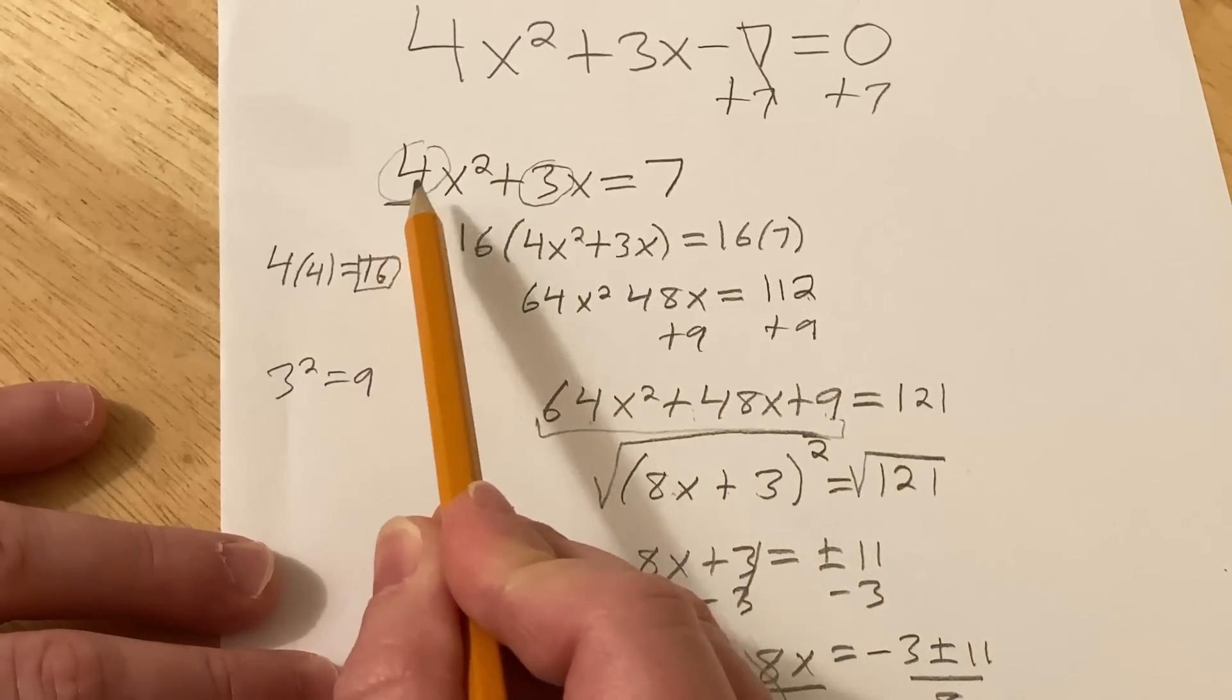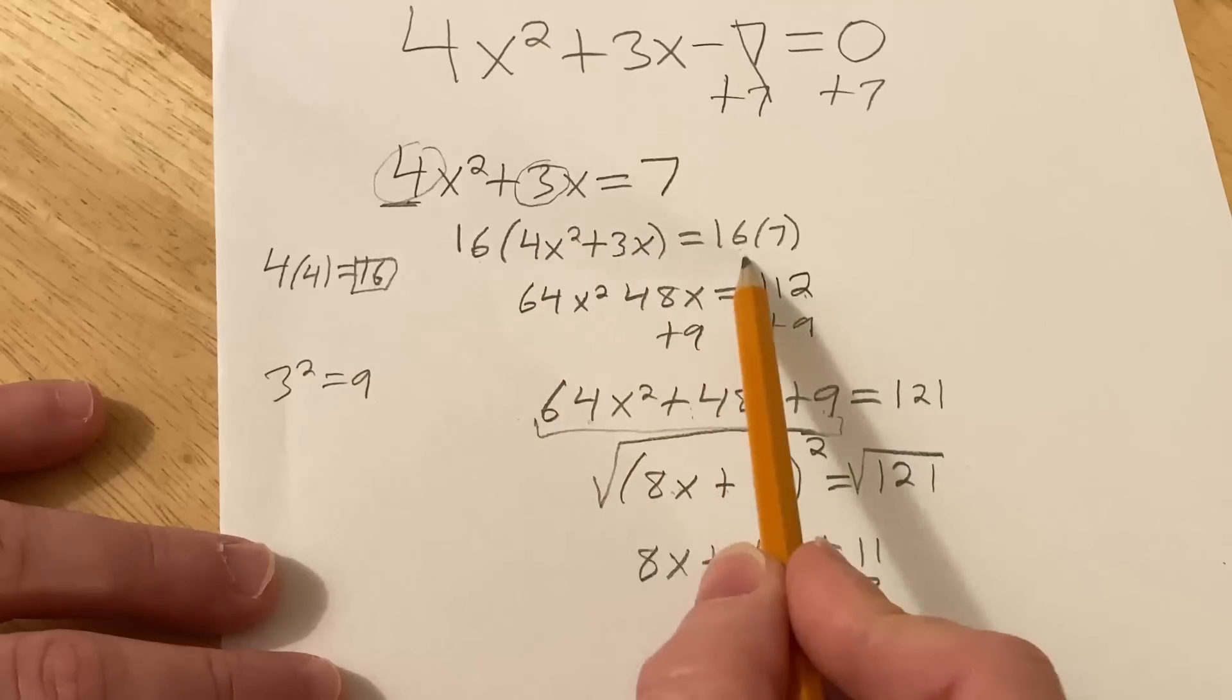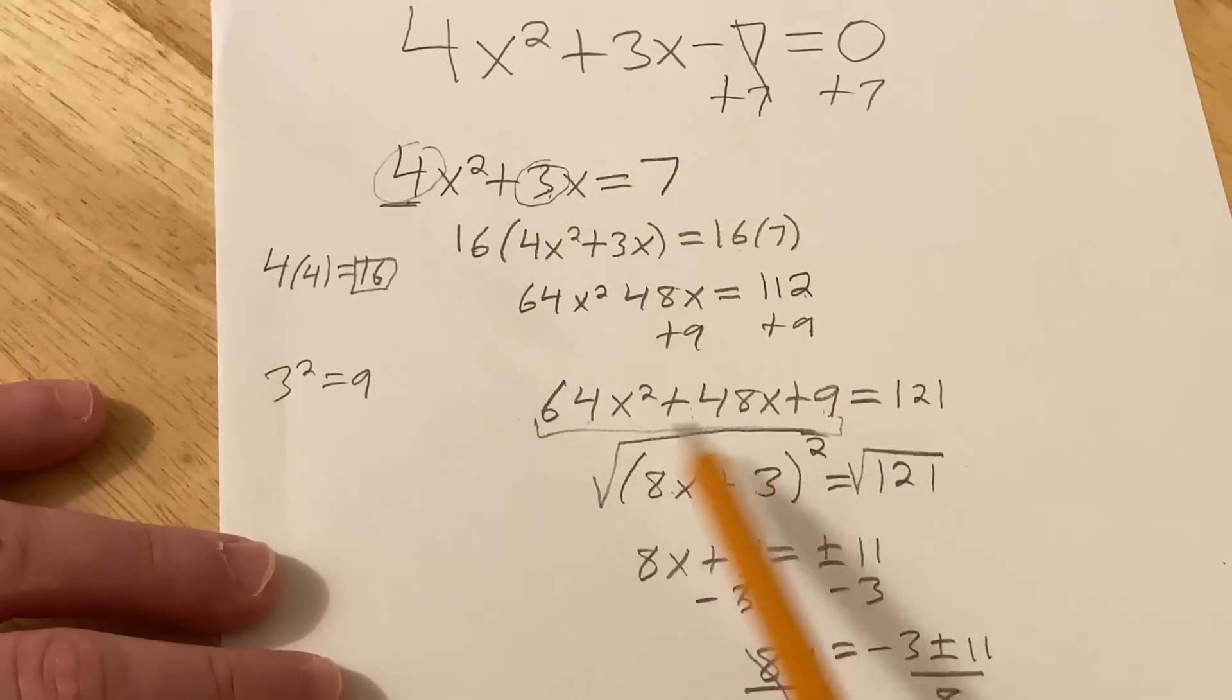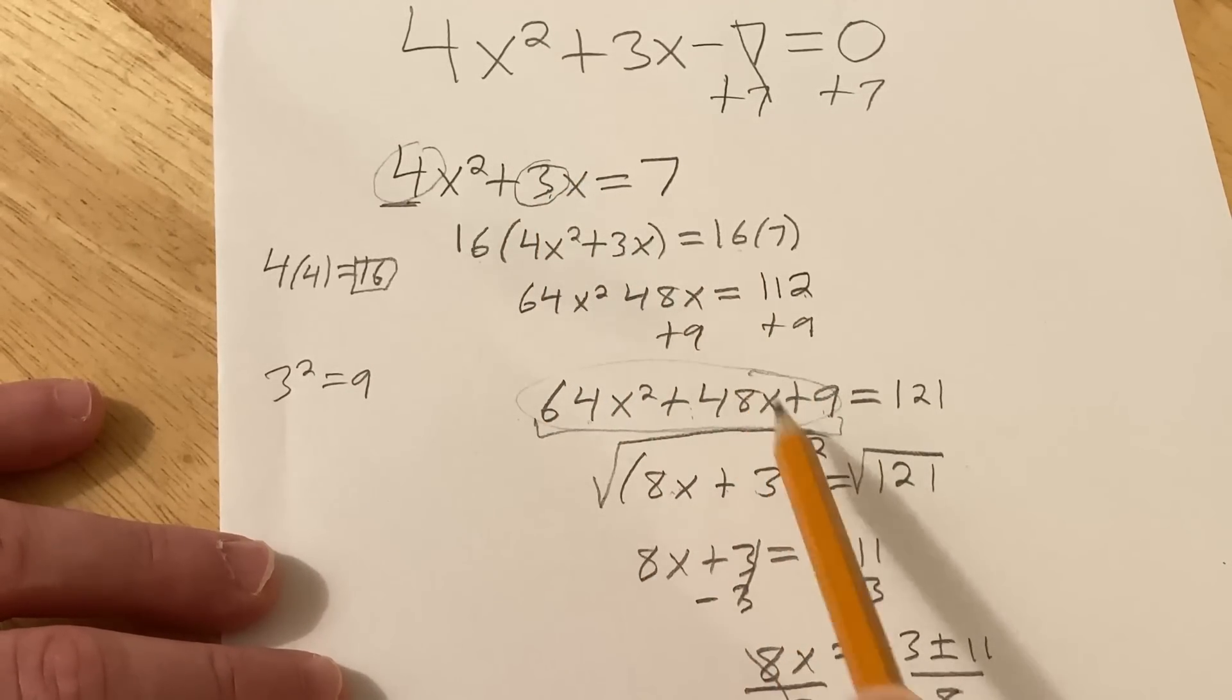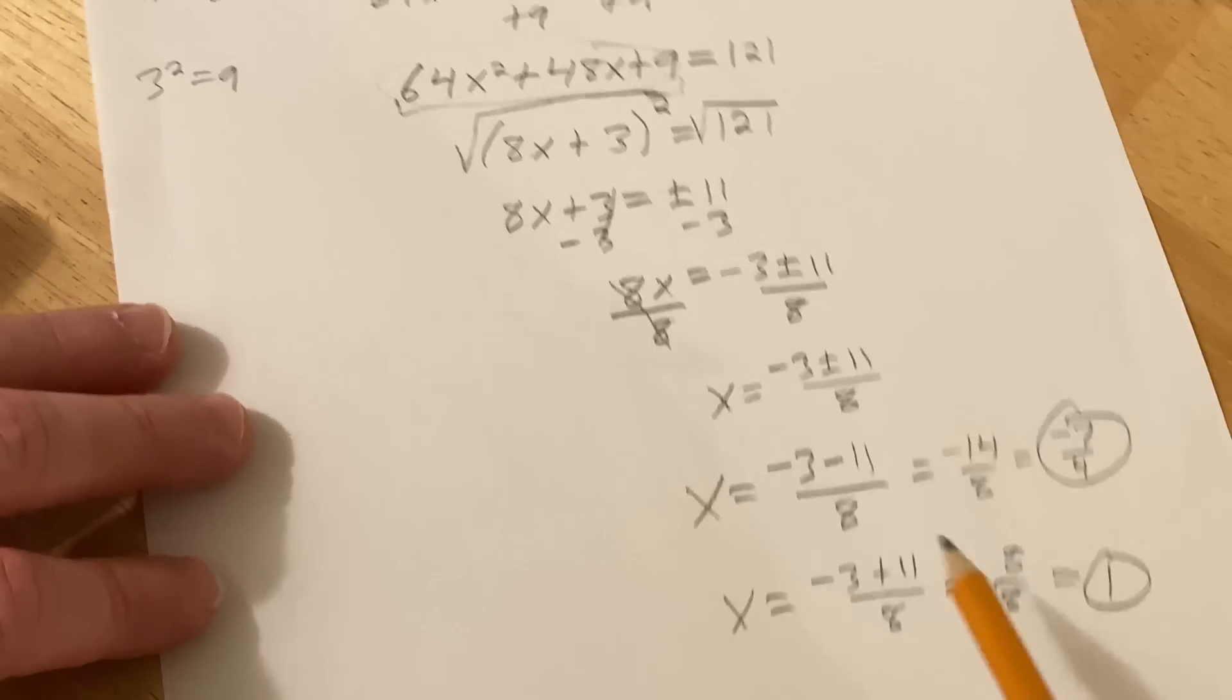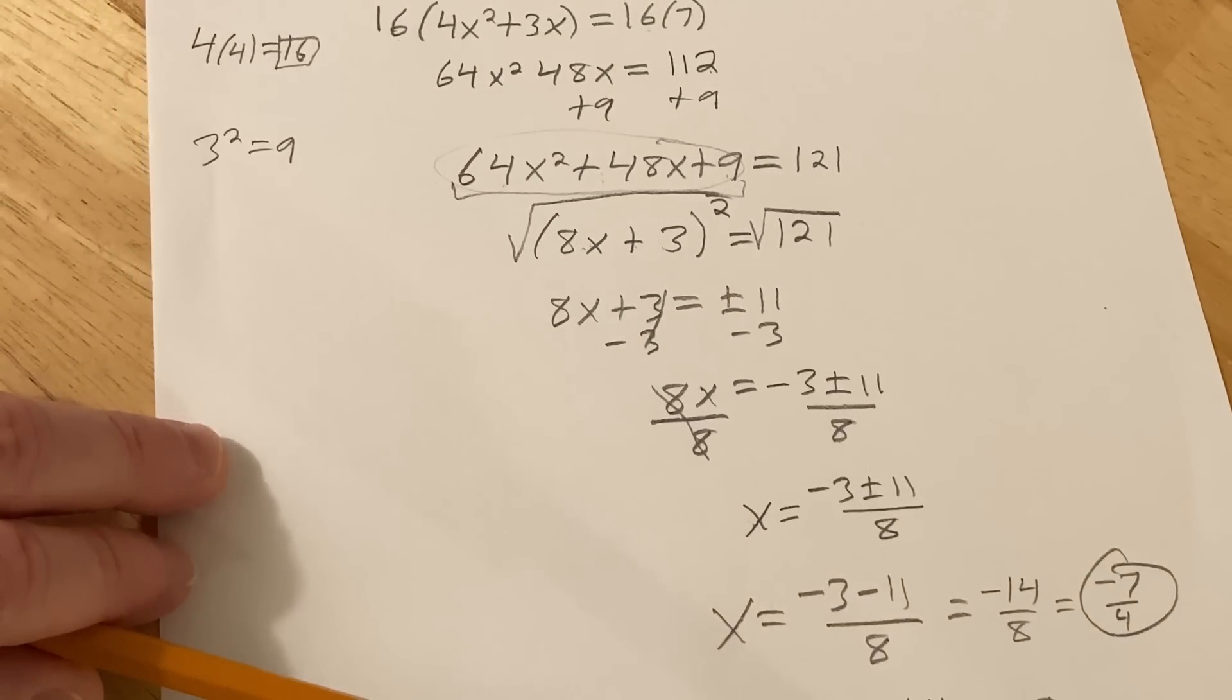Step 1, you take this, multiply it by 4. And then you multiply the whole equation by that number. Step 2, take this number, square it, add it to both sides. This thing will be a perfect square trinomial, which means it factors, which means you can take the square root and proceed like you normally do when completing the square. Let's go ahead and do another example right now.